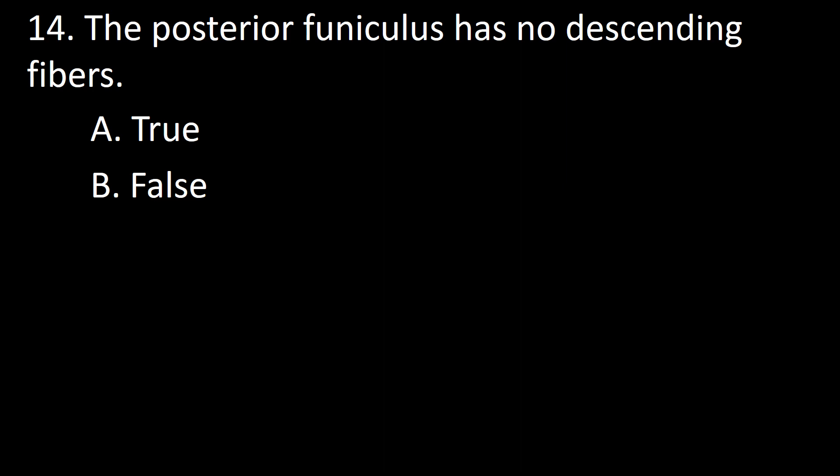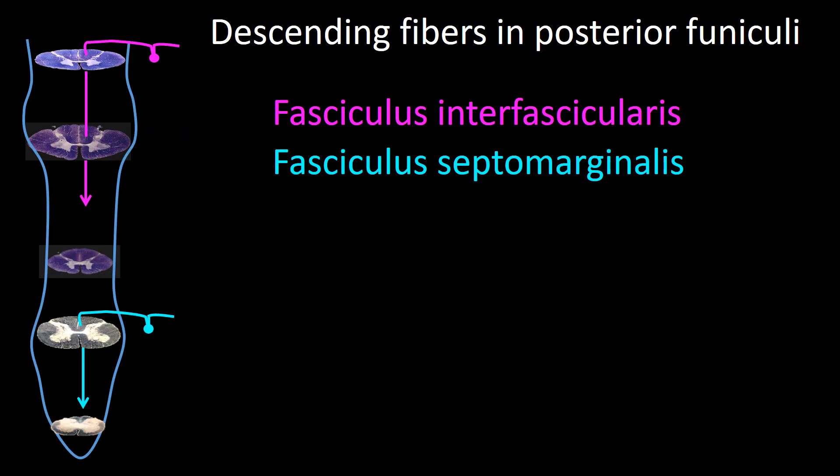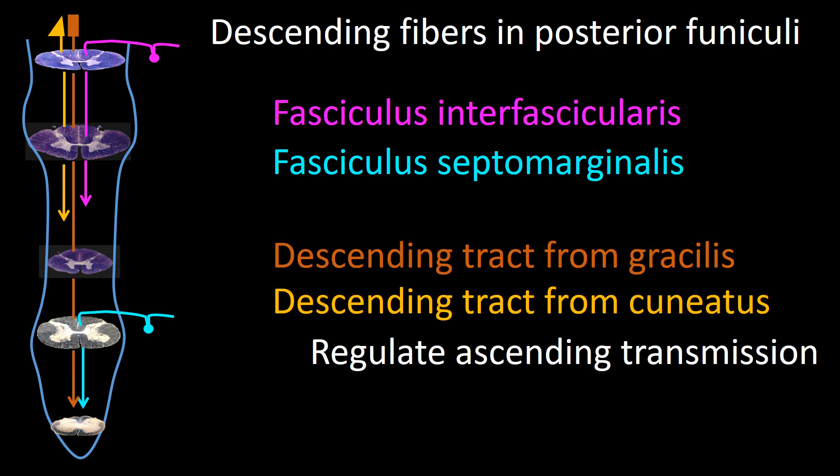Next question: the posterior funiculus has no descending fibers — true or false? Also in the dorsal funiculus we find descending fibers from the dorsal root ganglia forming the fasciculus interfascicularis in the upper spine and the septomarginal fasciculus in the lumbar region. The gracilis and cuneatus nuclei also project ipsilaterally descending fibers that probably regulate ascending transmission. So the answer is false.